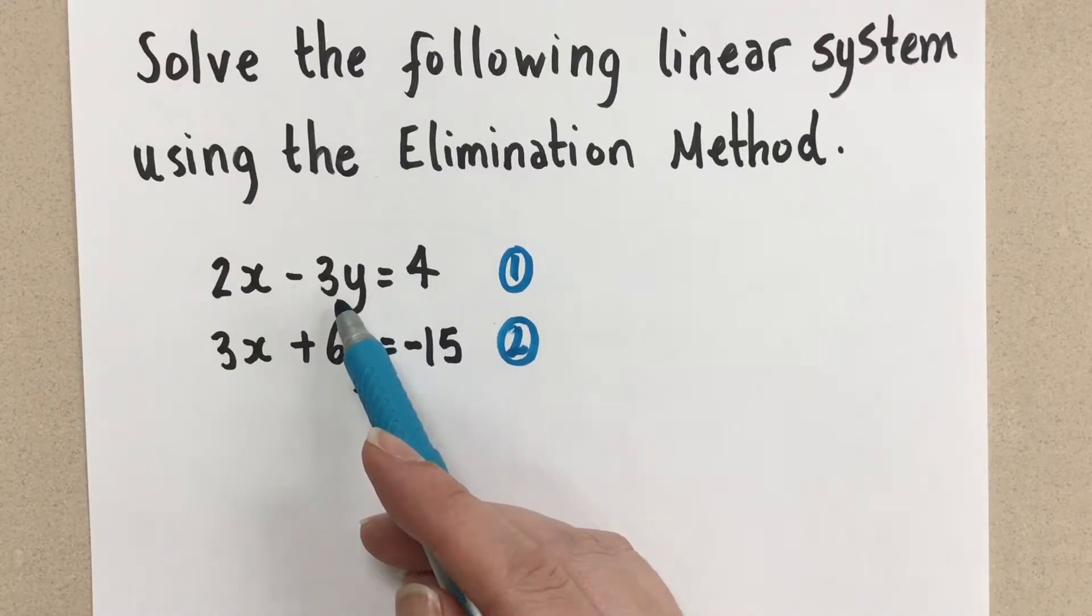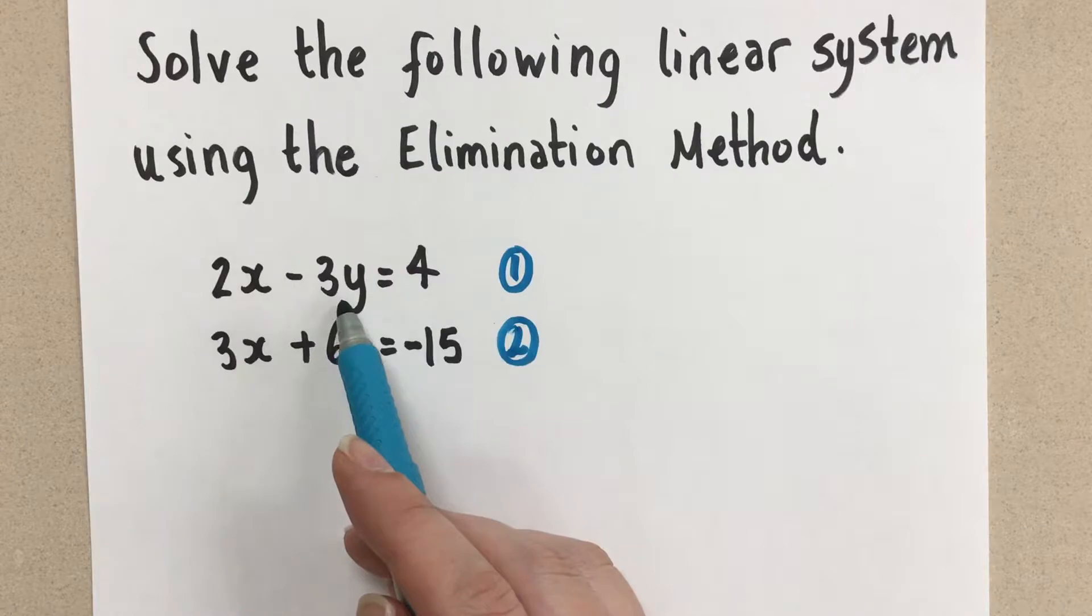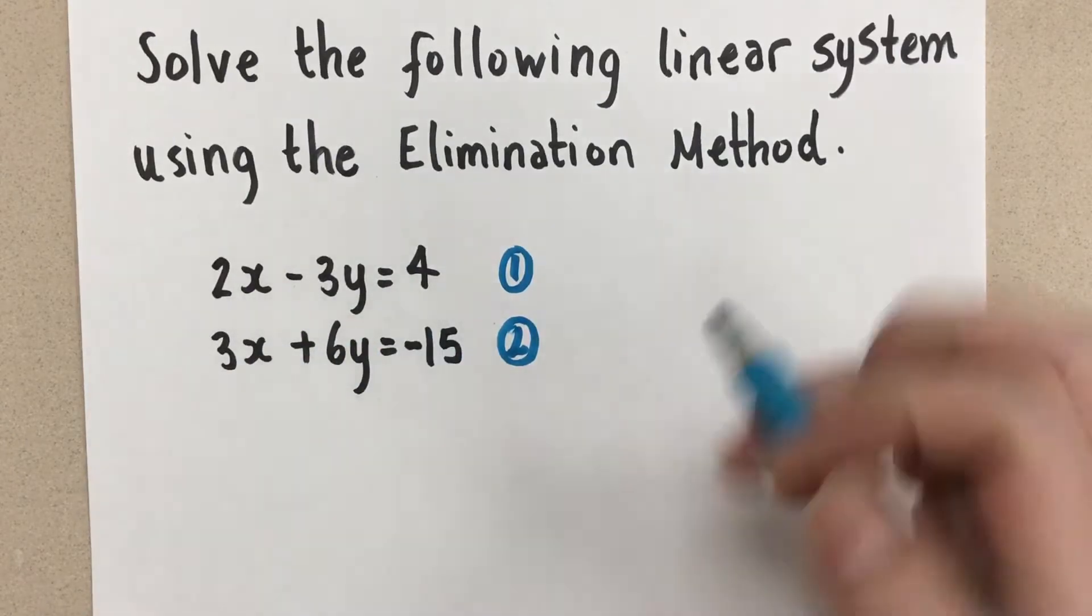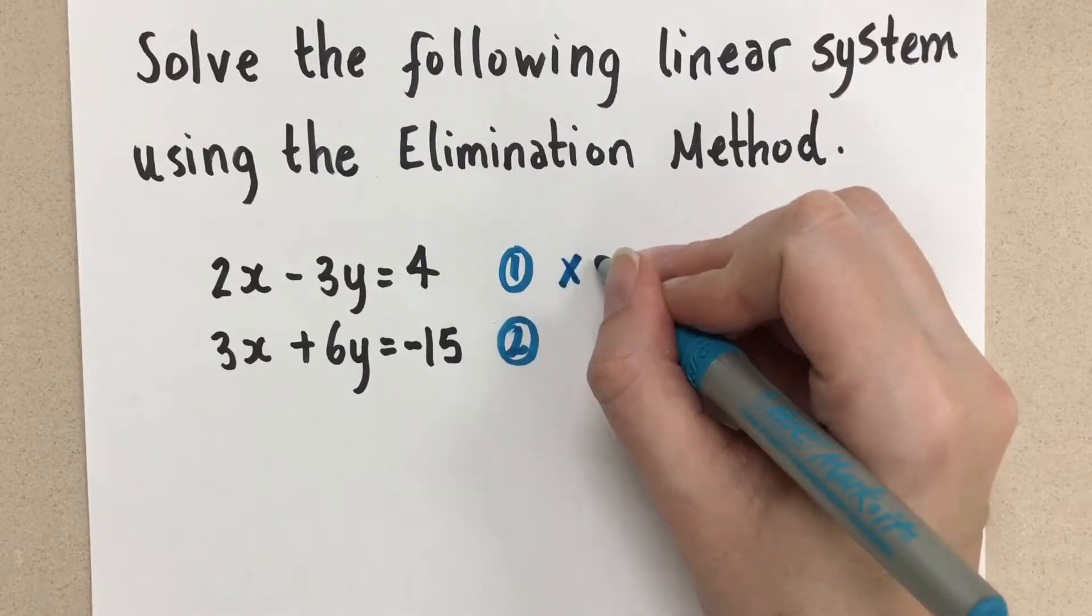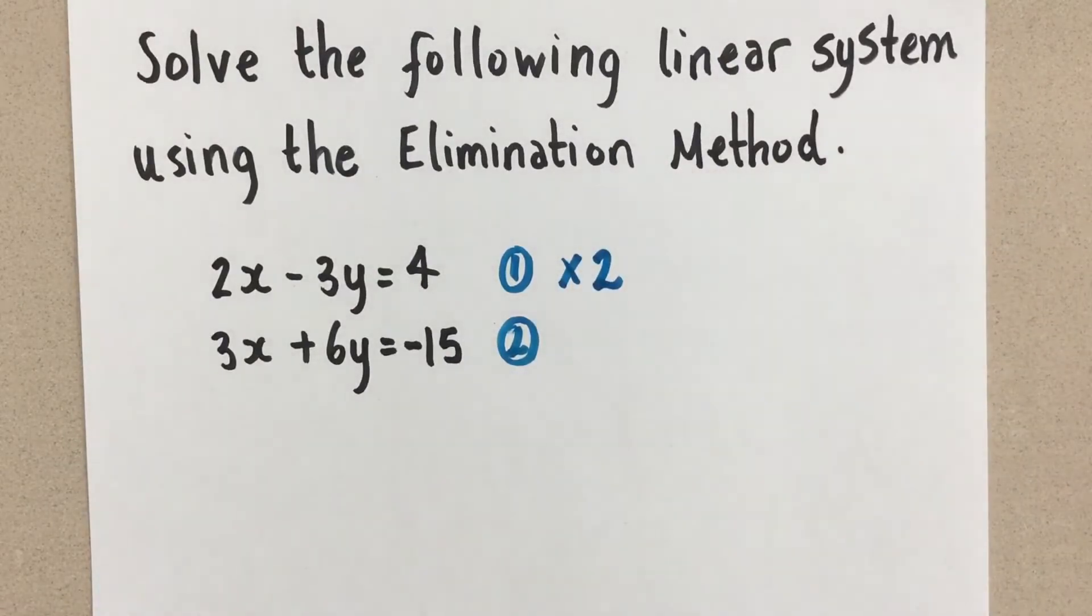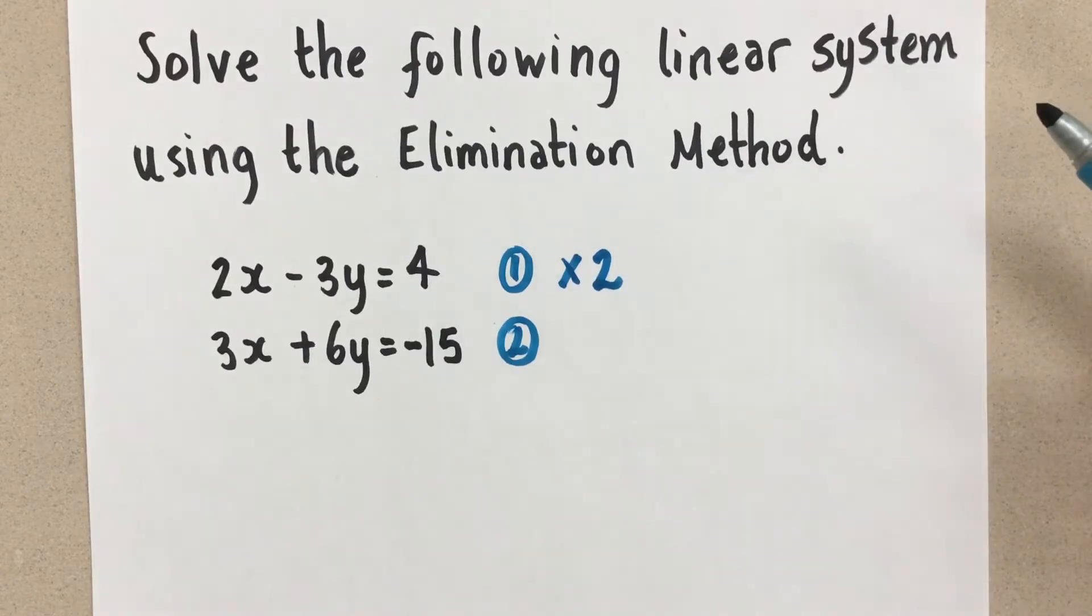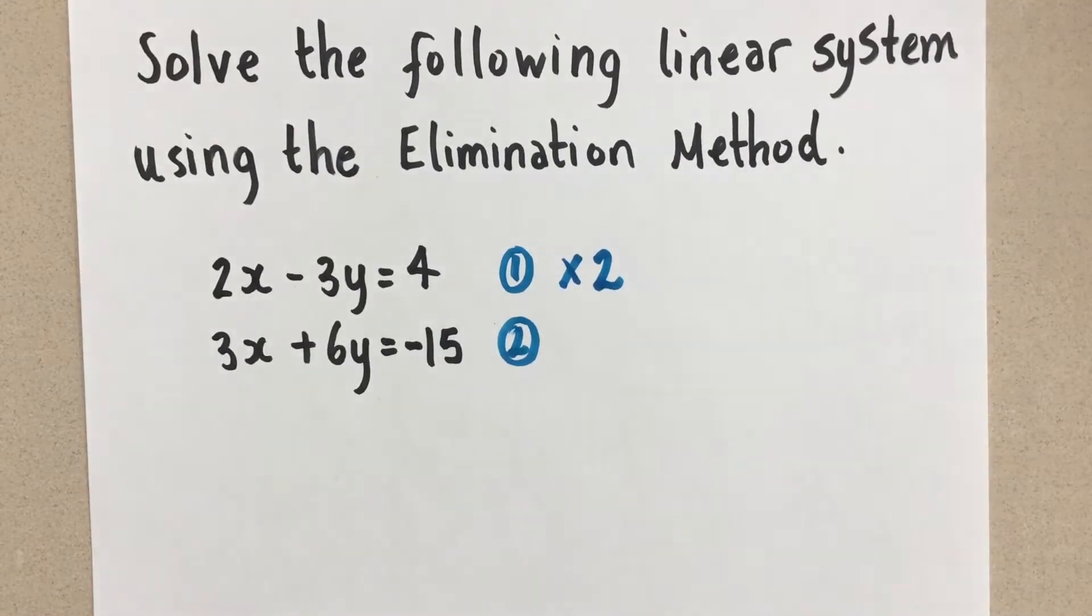So if I want to change this to a 6, I have to multiply it by 2. But if I multiply this term by 2, I need to multiply this term by 2 and this term by 2. You have to multiply the entire equation by 2 in order to keep it the same equation and not change it into something else.